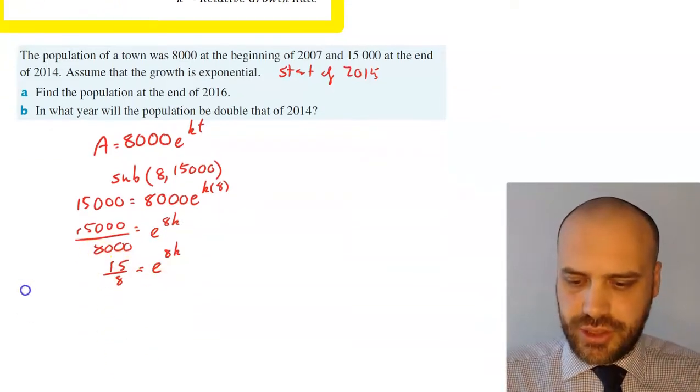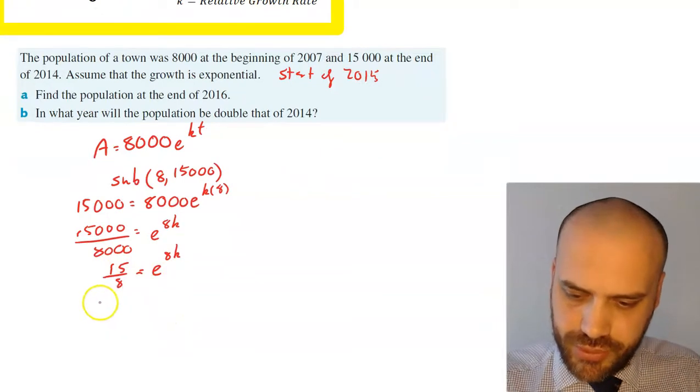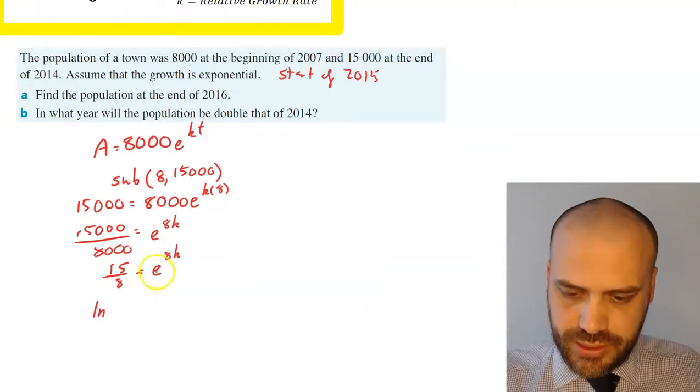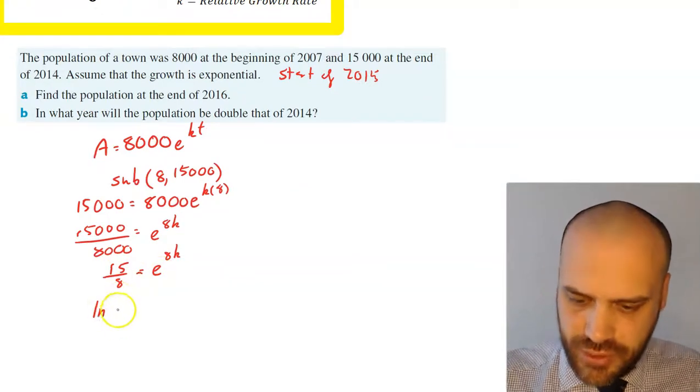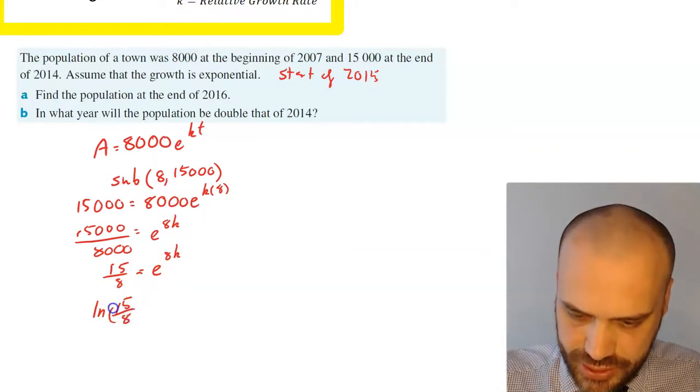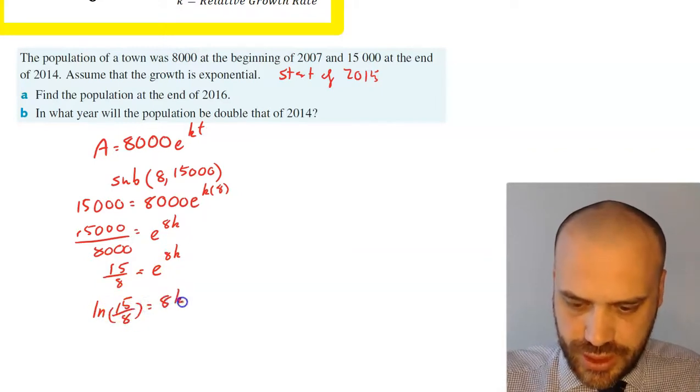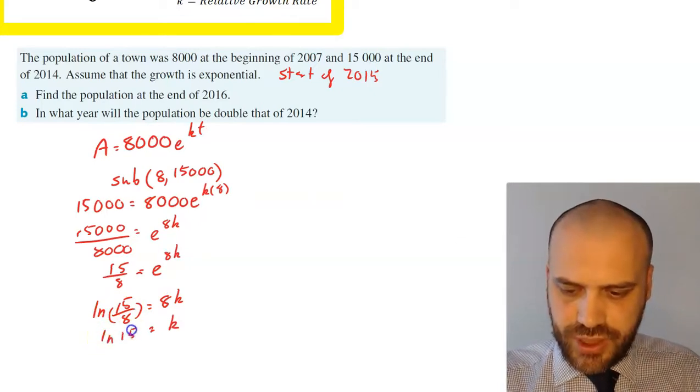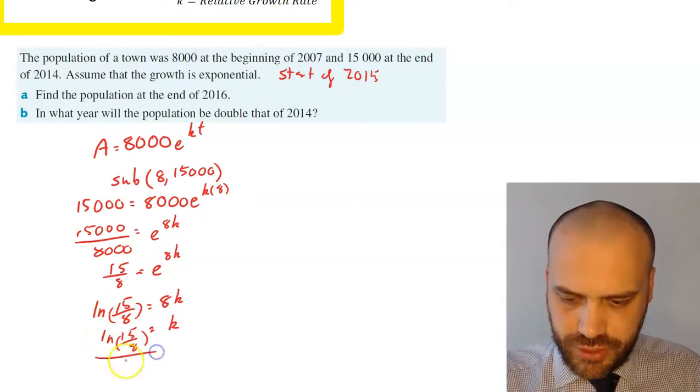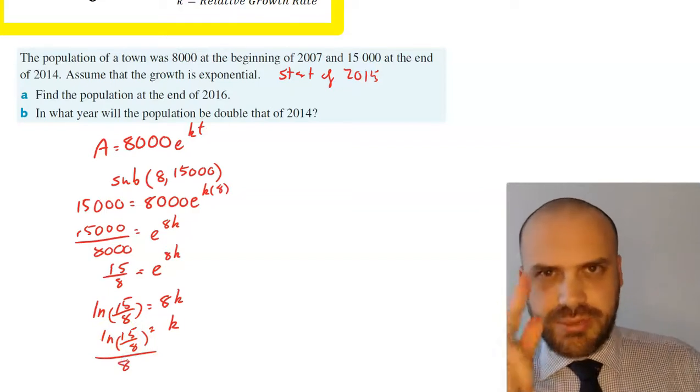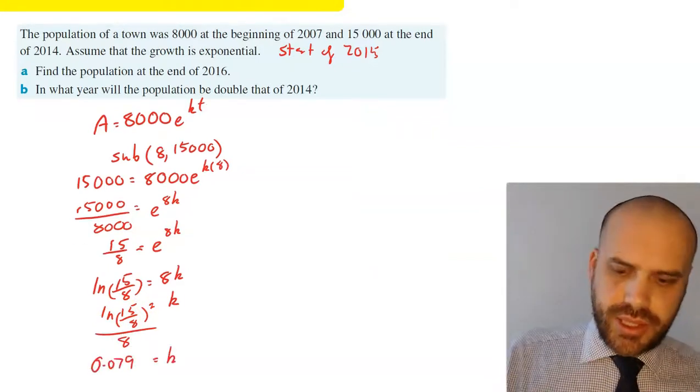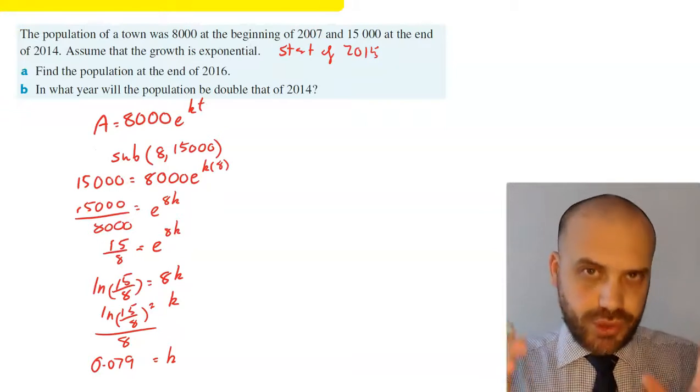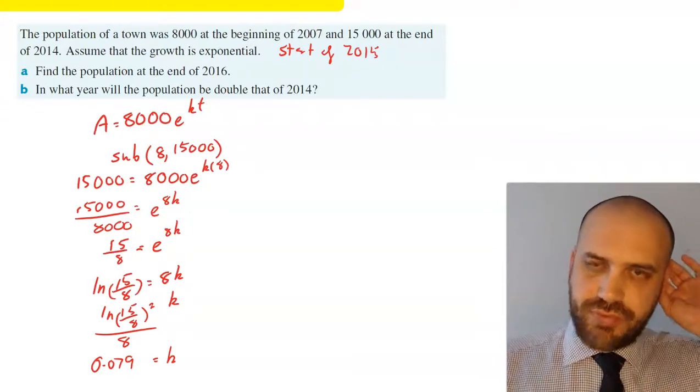Now I can take this and write it in logarithmic form. So I can say that ln, so log base e, 15 over 8 equals 8k. And that means that k is going to be equal to ln(15/8) divided by 8. So there's my k value. Now if you were to type that into your calculator, you'd get a k value of approximately 0.079.